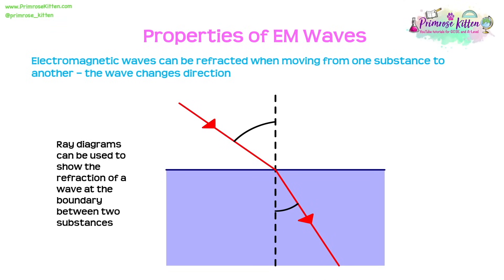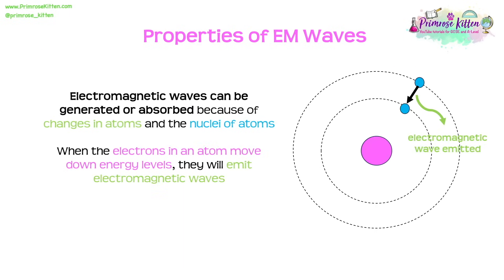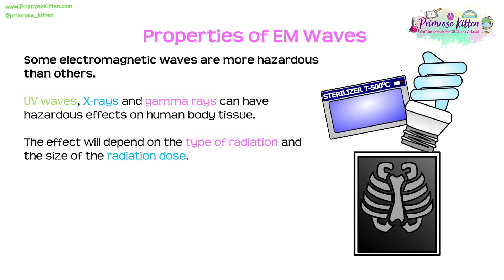Electromagnetic waves can be refracted when they move from one substance to another, meaning the wave changes direction. We can use ray diagrams to show refraction at the boundary between two substances. Electromagnetic waves can be generated or absorbed due to changes in atoms and their nuclei. When electrons in an atom move down energy levels, they emit electromagnetic waves. Some electromagnetic waves are more hazardous than others — UV rays, X-rays and gamma rays can all have hazardous effects on human body tissues, depending on the type of radiation and the size of the radiation dose.